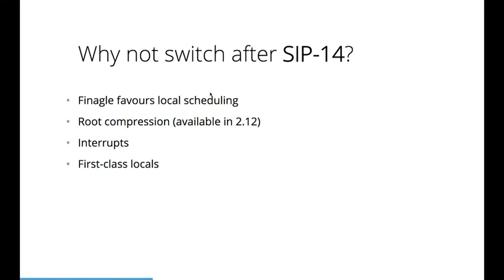Two and a half years later, we got Scala futures in place - Scala 2.10, Scala futures and Scala promises. And yet, as you know, Finagle and the rest of the Twitter ecosystem is still using its own future implementation. There are actually technical reasons for that - we're not talking about business reasons of switching from one future implementation to another. Those two future implementations were already so different in terms of capabilities and options, and they remain different until this very moment.